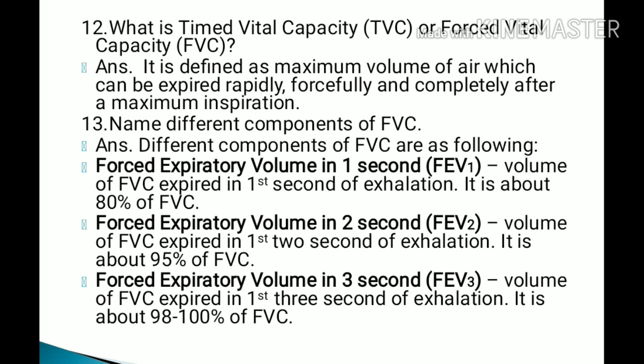The components of forced vital capacity are: FEV1 — the volume of FVC expired in the first second of exhalation, about 80% of FVC; FEV2 — the volume of FVC expired in the first two seconds, about 95% of FVC; and FEV3 — the volume of FVC expired in the first three seconds, about 98 to 100% of FVC.